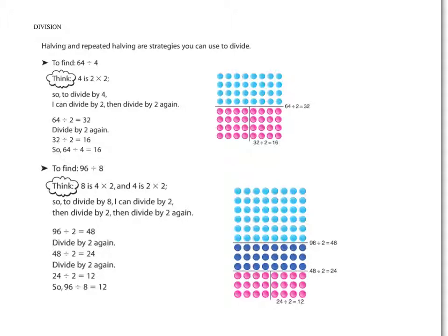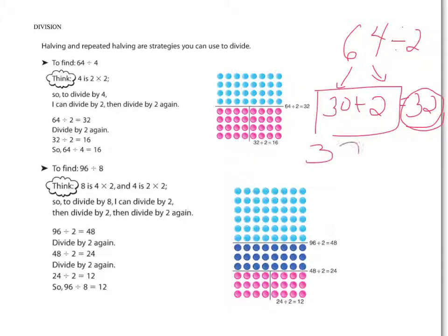Halving, or cutting in half, and repeated halving, cutting in half again, are strategies that you can use to divide. So, for example, say we were trying to find 64 divided by 4. Well, you think in your head 4 is 2 times 2. So, if you divide 4 by 2, so to divide by 4, I can divide by 2, and then divide by 2 again. So, what is 64, the whole group of 64, divided into 2 groups? Well, I can think, 64. 60 divided into 2 groups is 30. 4 divided into 2 groups is 2. Altogether, there's going to be 32 to be half of 64. That means I've found out now what 64 divided by 2 is.